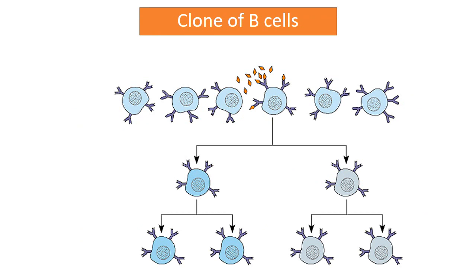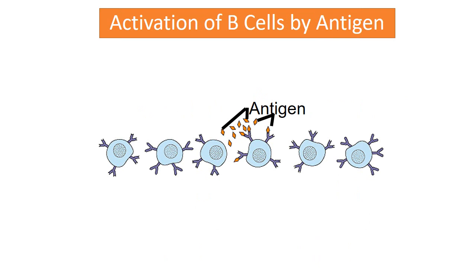Once a specific B lymphocyte is activated by its antigen, it reproduces wildly, forming a tremendous number of duplicates known as a clone of B cells. Macrophages in the lymphoid tissue phagocytose the antigen and present it to the B lymphocyte. Helper T cells, a type of T lymphocyte, also contribute in activating B lymphocytes.